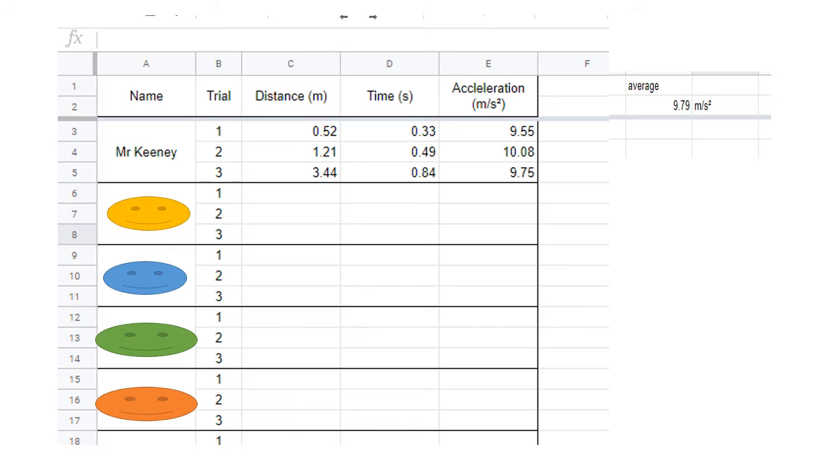What you're going to do after that is enter your data into this wonderful chart that we have on your Google Classroom. Mr. Keeney has some sample data here. Let's say I am the yellow smiley face. I measured that my first drop was 1.6 meters and it took 0.72 seconds, and then I have to calculate what the acceleration would be.